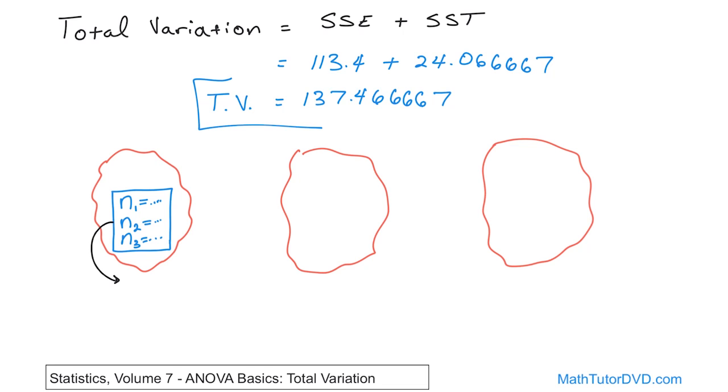So basically if I take a look at these samples right here, then what I can learn from it is I can calculate how each sample varies with respect to its sample mean, which the sample mean is x bar, right? So this was basically SSE, sum of squares of error.